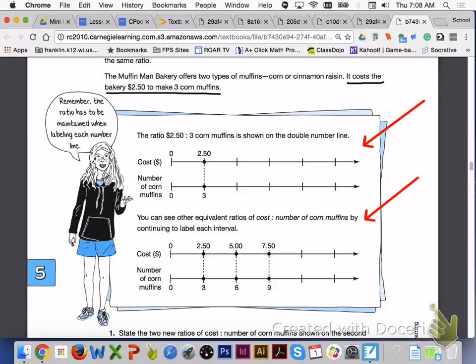You can see other equivalent ratios of cost to number of corn muffins by continuing to label each interval. Remember, the ratio has to be maintained when labeling each number line.